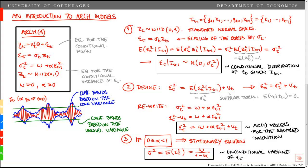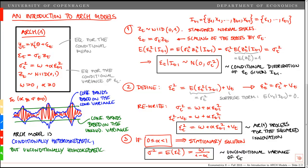Given that the stationarity condition holds, the ARCH model is conditionally heteroscedastic but unconditionally homoscedastic. The interpretation is: if there is a large innovation at t minus 1, the conditional variance in period t will be high; if the shock last period was small, the conditional variance next period will also be small. This is exactly the concept of volatility clustering.